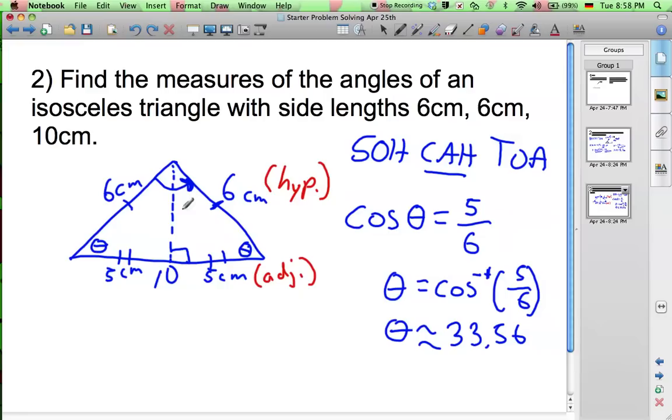What's left is to just find the measure of this angle over here. In a triangle, the sum of the angles is 180 degrees. So, we need to do 180 degrees and take away these two angles, subtract 2 times 33.56 because we're subtracting the measures of those two angles.